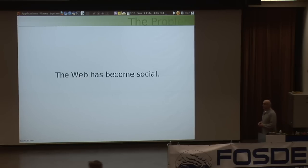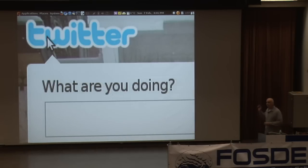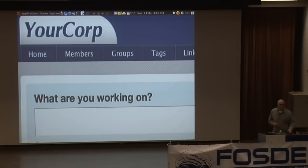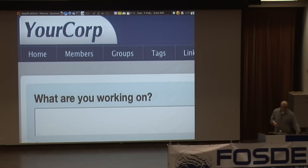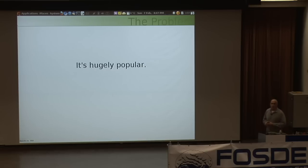The web has become social. Sociality is an important part of what people use the web for. And social has become status. People are asking this question: What are you doing? What's on your mind? What are you working on? These little boxes pop up everywhere — this is what people interact with on the web. Status matters. Status is an important part of the social web. It's a very popular part — everyone who knows about the popularity of Twitter knows that this is an important part of the current landscape.